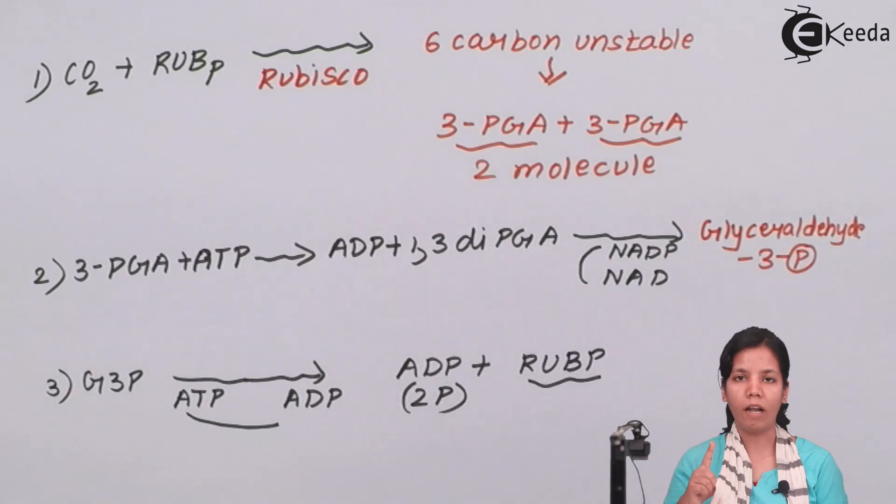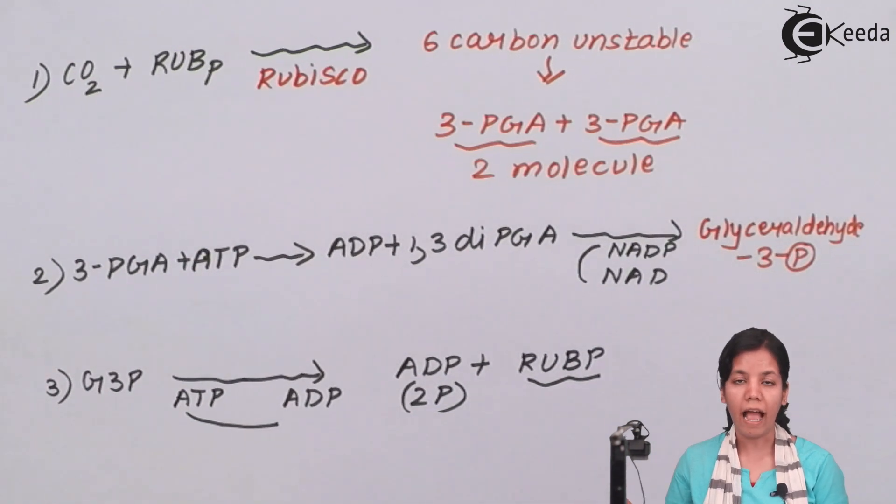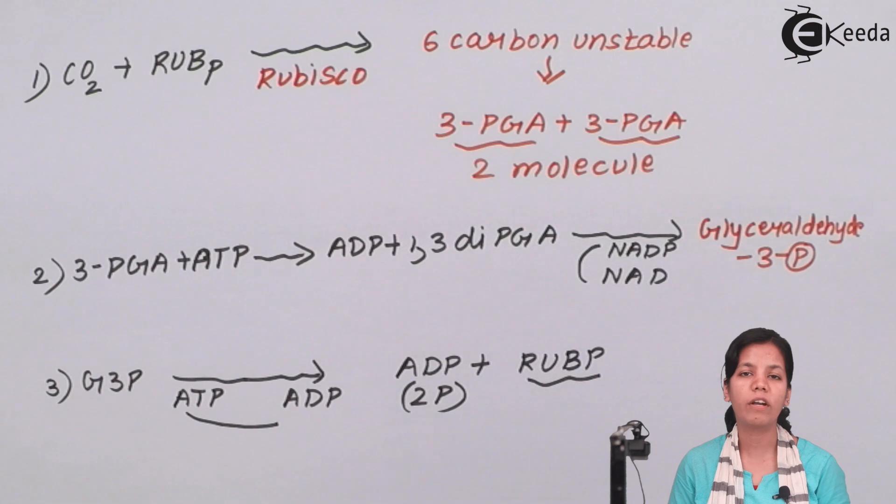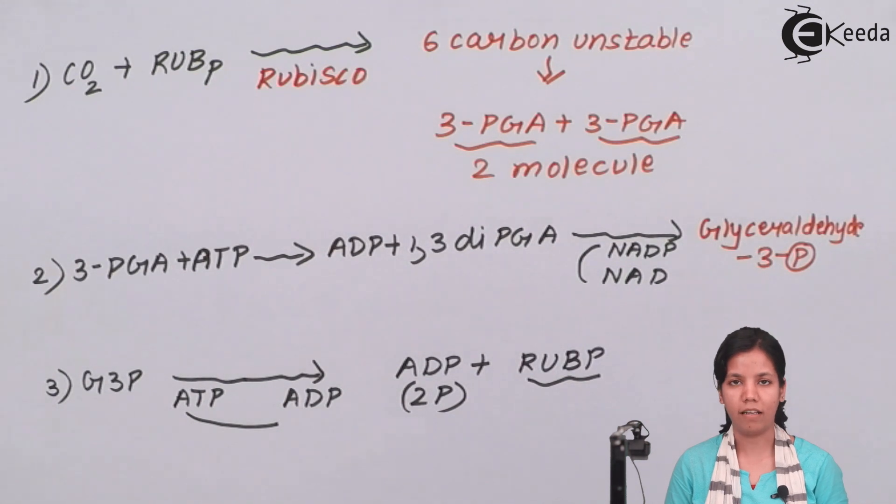To fix one molecule of oxygen Kelvin cycle has to run 6 times. So this reaction which we have written has to be done 6 times to generate one oxygen molecule. So students this is all about Kelvin cycle. I hope you all are clear with the steps of Kelvin cycle and how does Kelvin cycle function. Thank you.